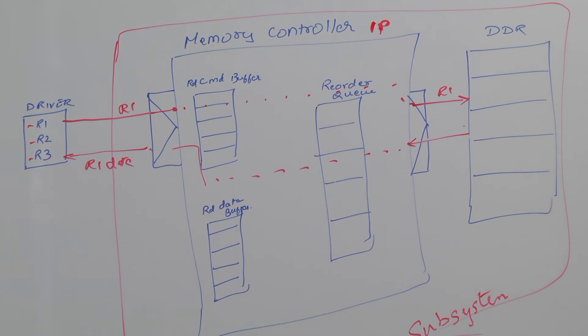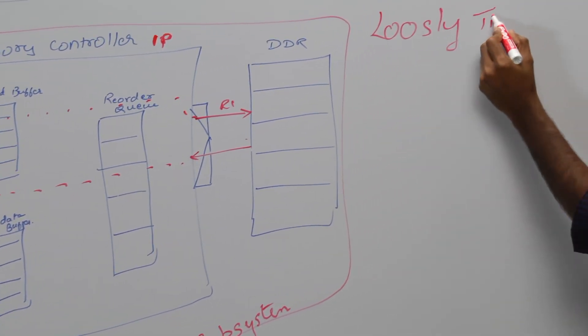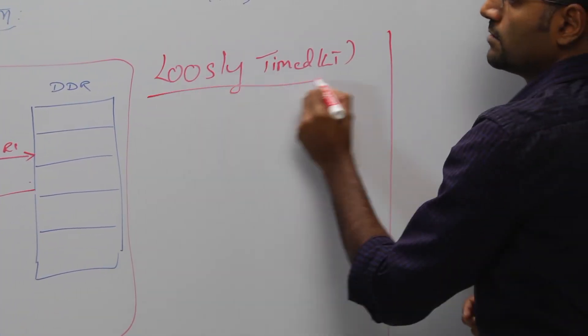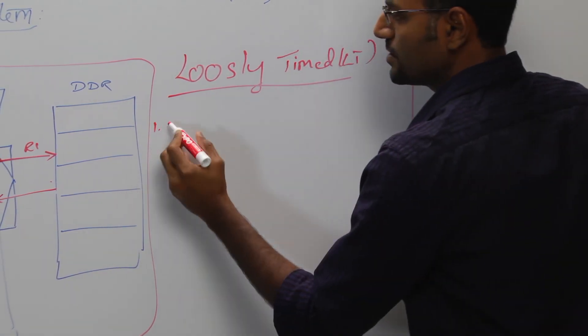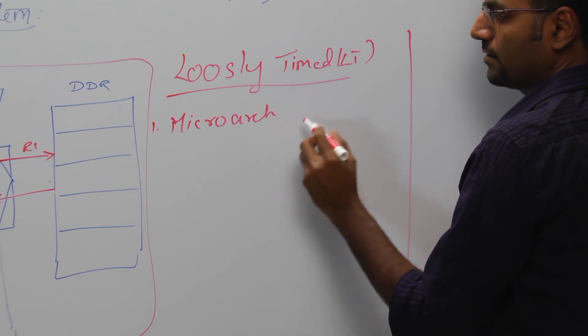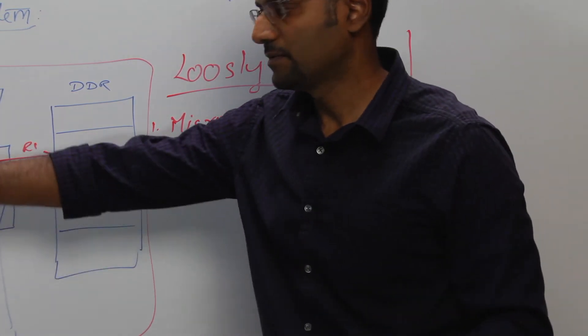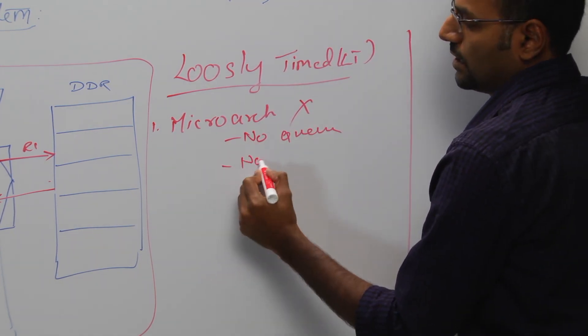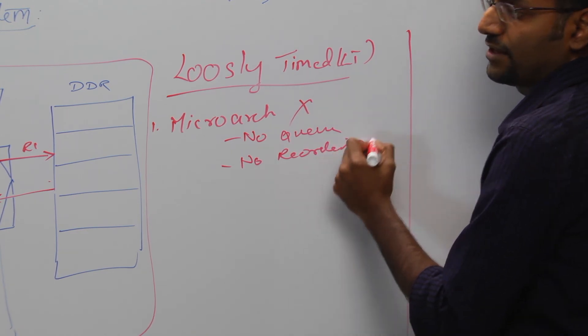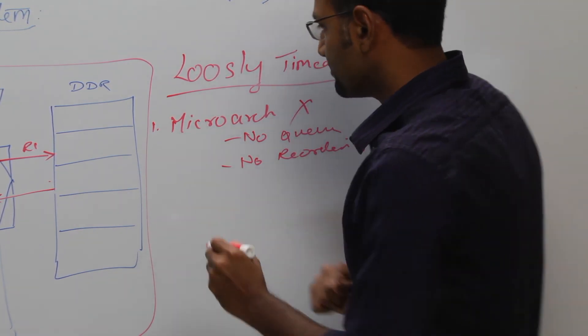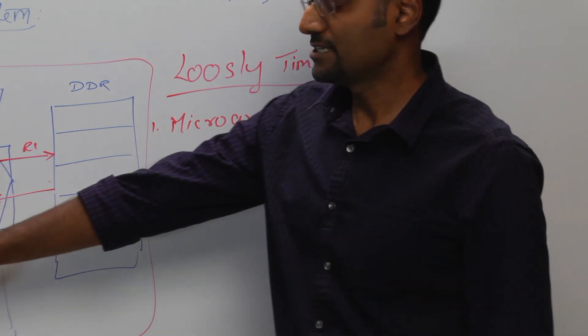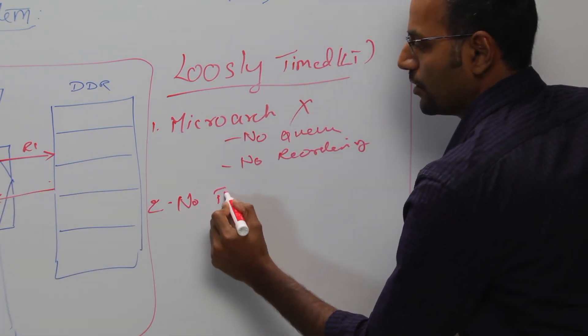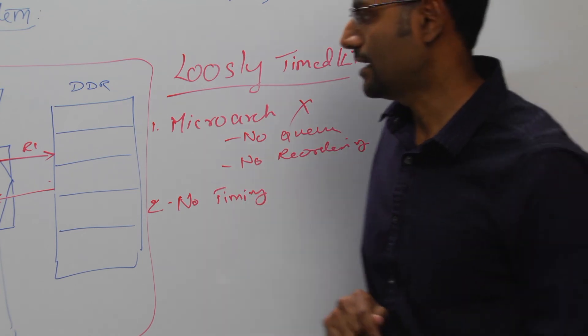Let's start listing out what a loosely timed model is. There is no concept of microarchitectural modeling here. So no queues, no reordering. You can't expect any of that from an LT model. Also, since there are no elements, no components or modules inside, there is also no timing, no clock, no waits or no delays as such.